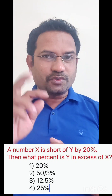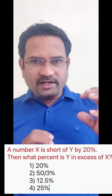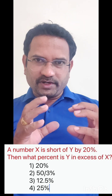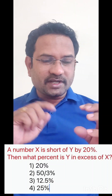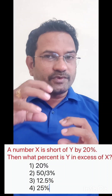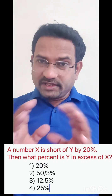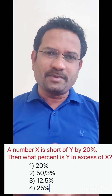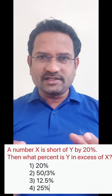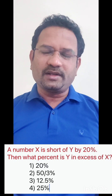Look at the options — the first option is 20%, given to confuse you. Even in the previous question, the first option always tries to trap you. Understand: if you take 20% of 80, you add 80 plus 16, it becomes 96. But 25% of 80 is 20, and 80 plus 20 becomes 100. So option 4, 25% is the answer. These questions are simple ones — they are not even considered arithmetic ability; they are considered general intelligence, like percentages. I hope this video is useful. Practice such questions and you will definitely do well. All the best.